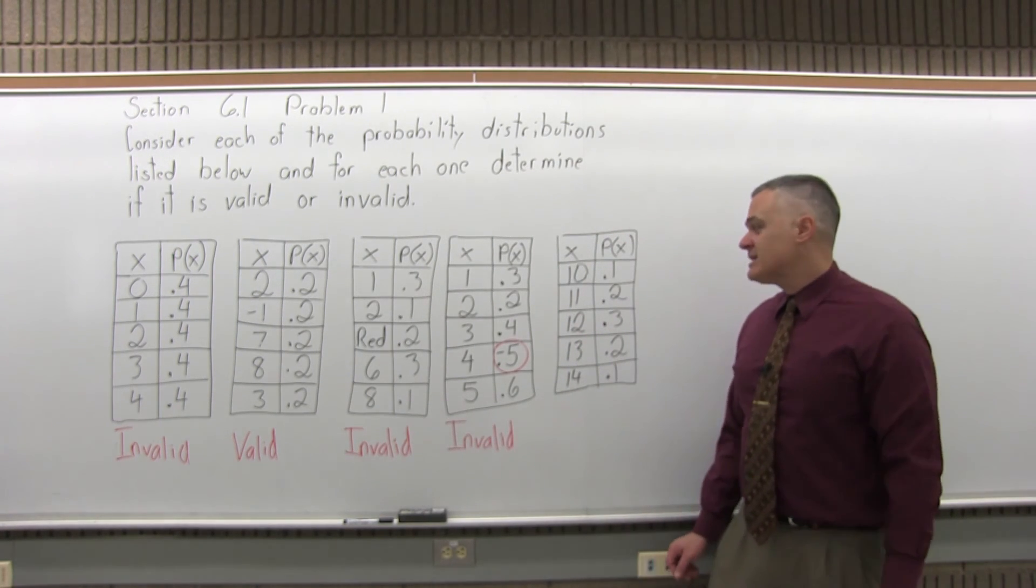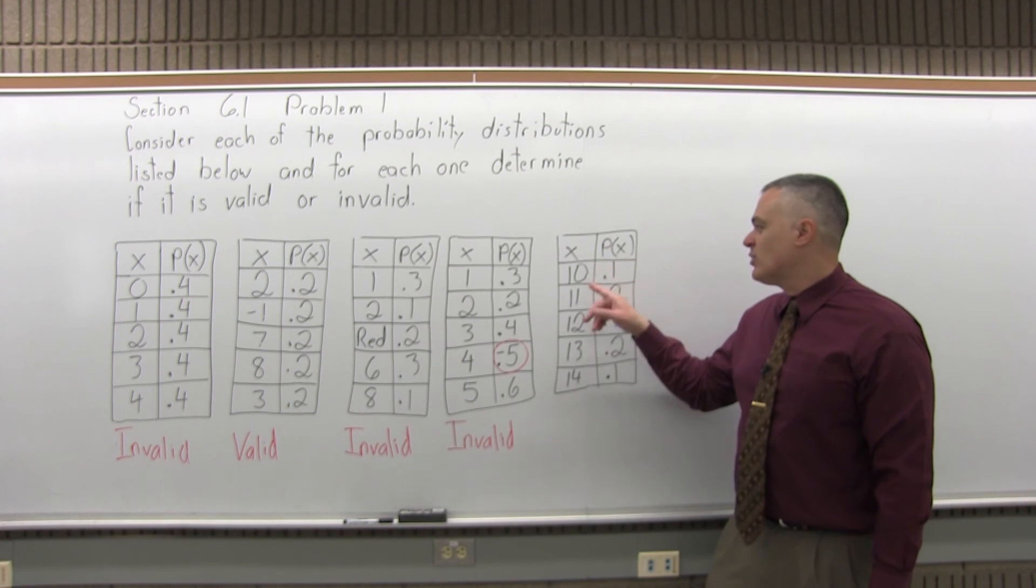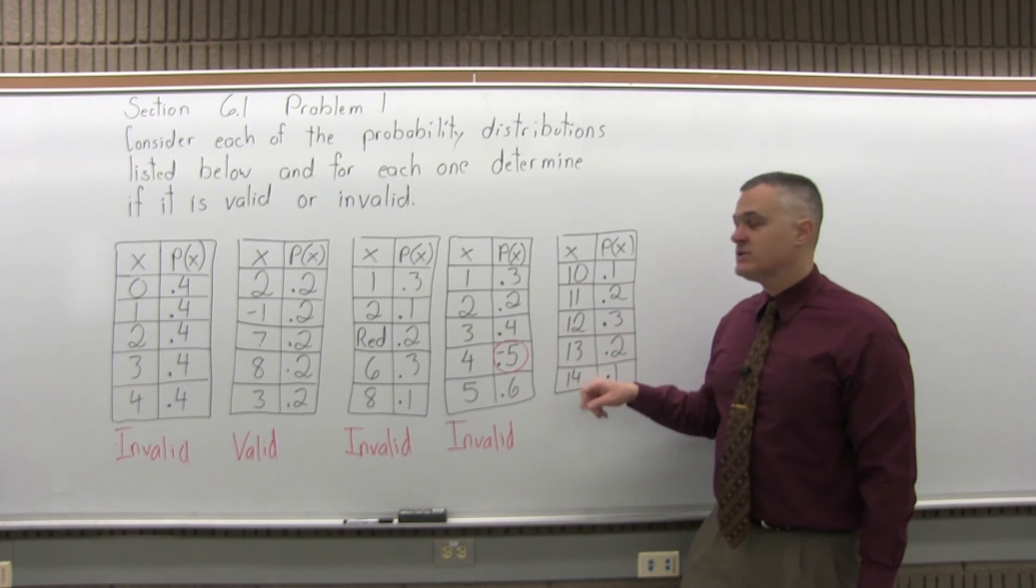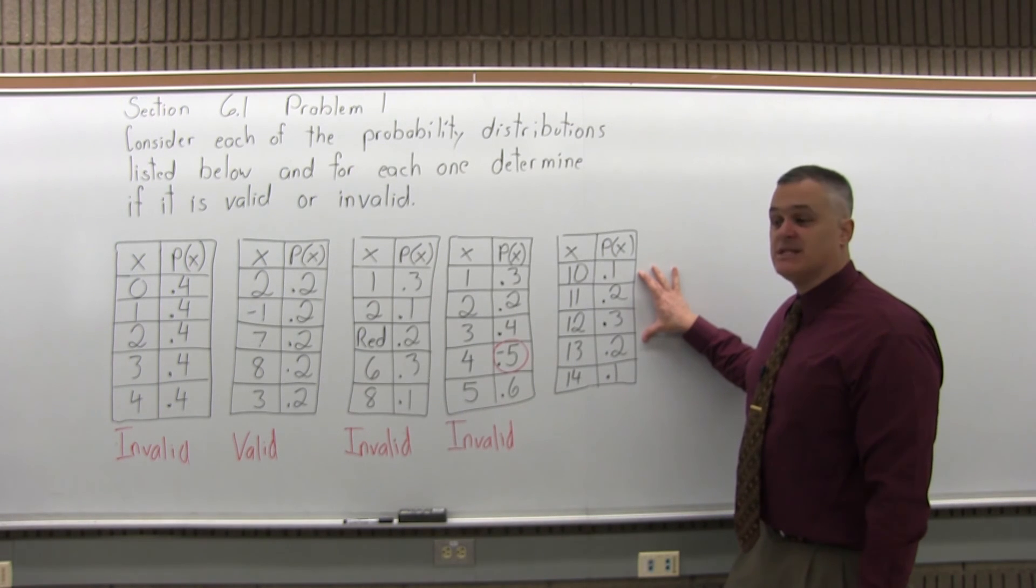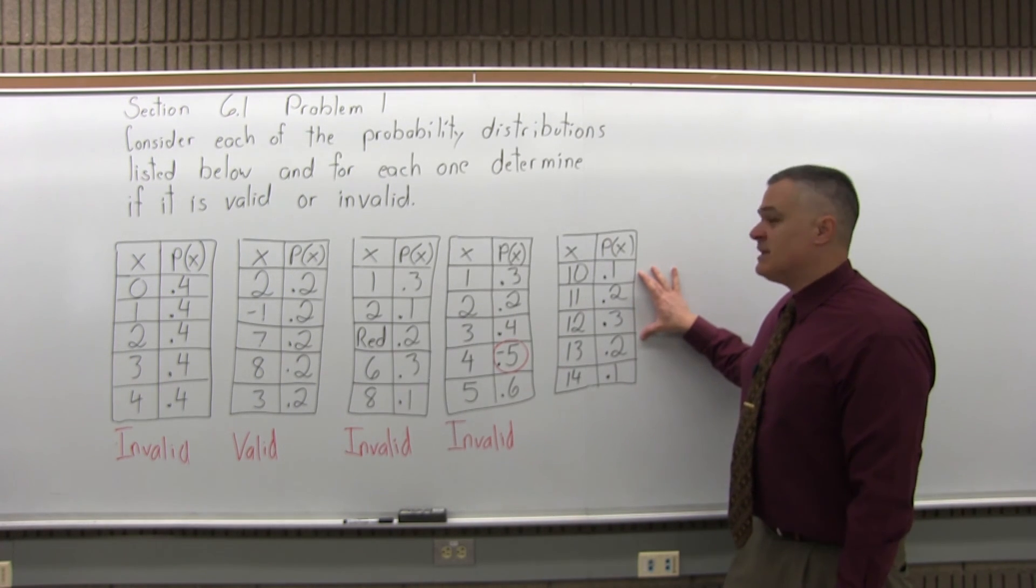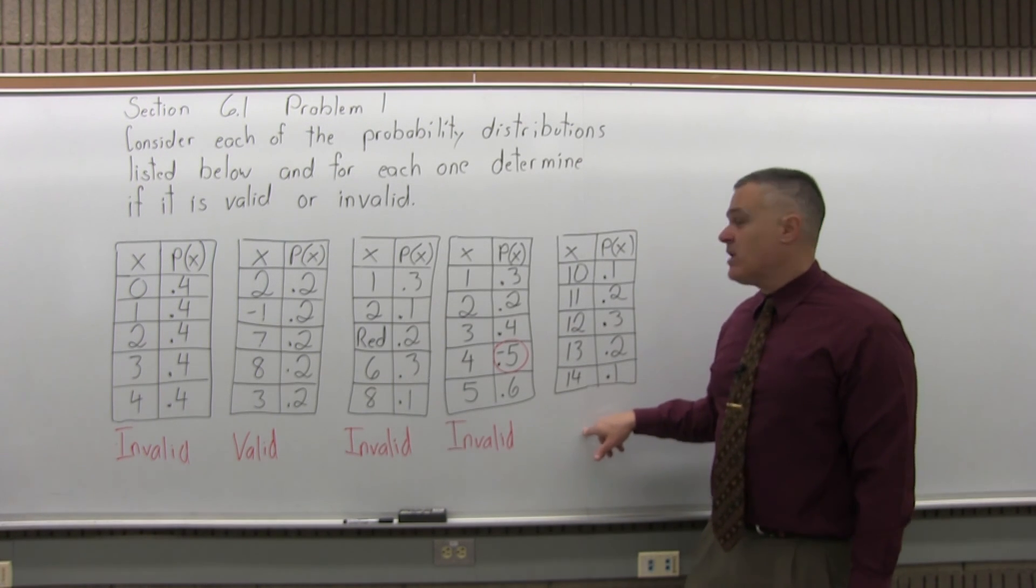And finally, the last probability distribution. First rule, everything in the first column is a number. It doesn't start with 1, but that's okay. These are all numbers in the first column. Everything in the second column is between 0 and 1. Now, does the total of the second column add up to 1.0?